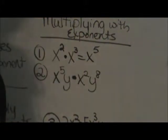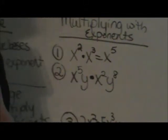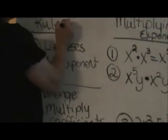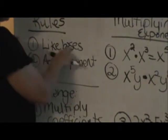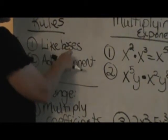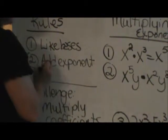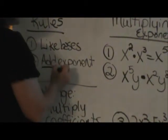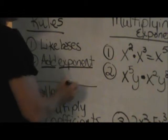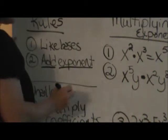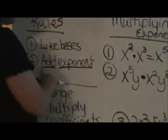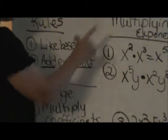What is the rule for that exponent? Here are the rules. When you have like bases, you're going to add the exponents. So when you're multiplying like bases, you will add exponents.